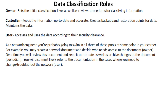As a network engineer, you're probably going to swim in all three of these pools at some point in your career. For example, you may create a network document and decide who needs access to it — in that case you're the owner. You might say you want the NOC and your engineering team to have it and nobody else, based on need to know. Over time you'll be reviewing and keeping that document up to date and archiving changes as the network grows — adding systems, changing IP addresses — that's the custodian role. And you'll also refer to that documentation whenever you need to change or troubleshoot the network, in which case you're acting as the user.